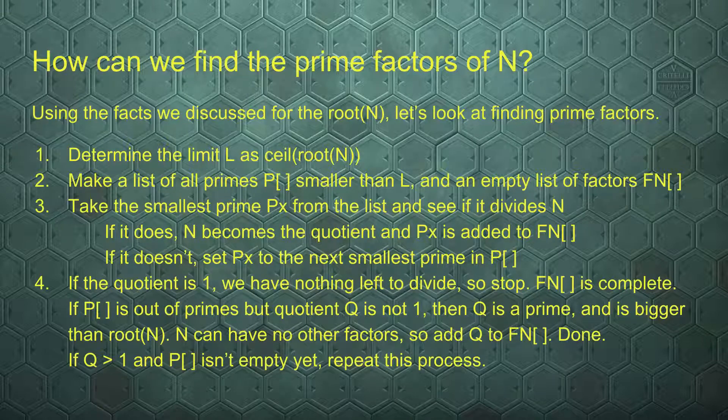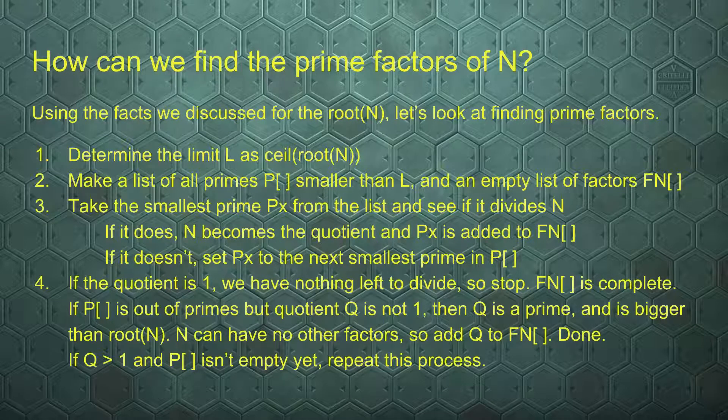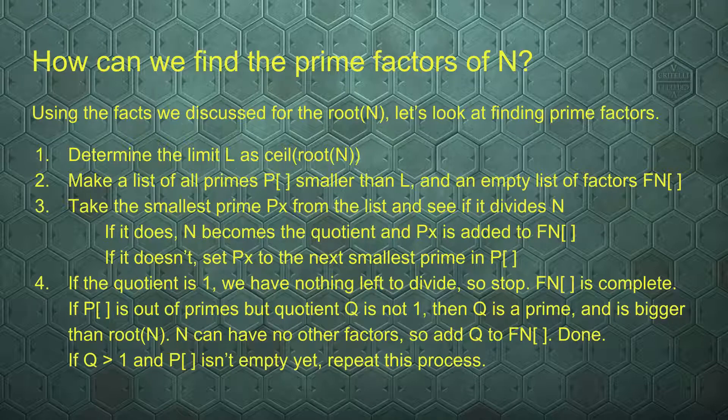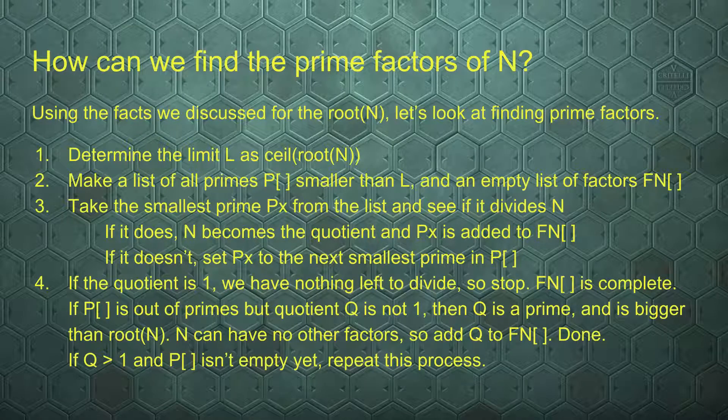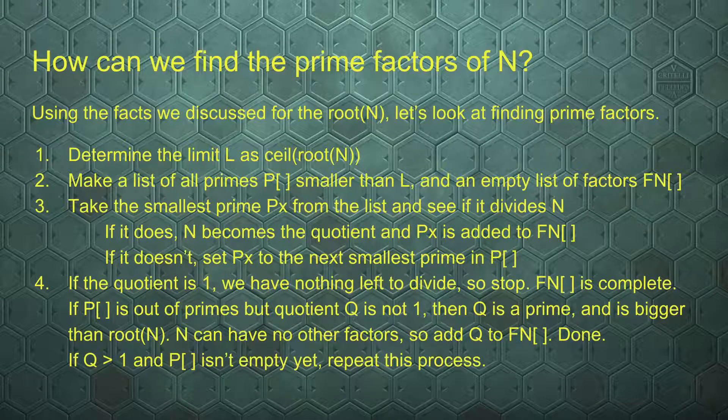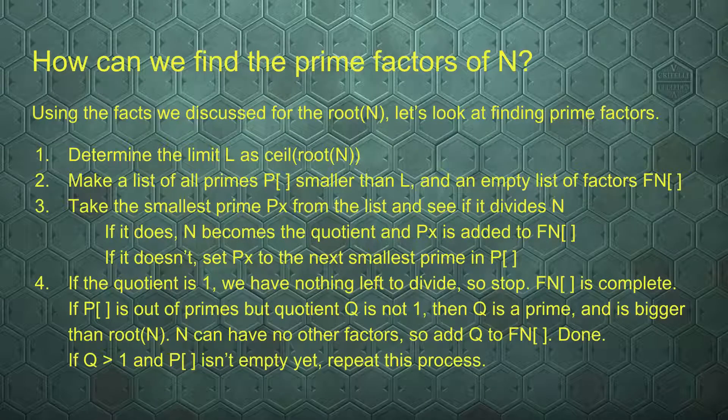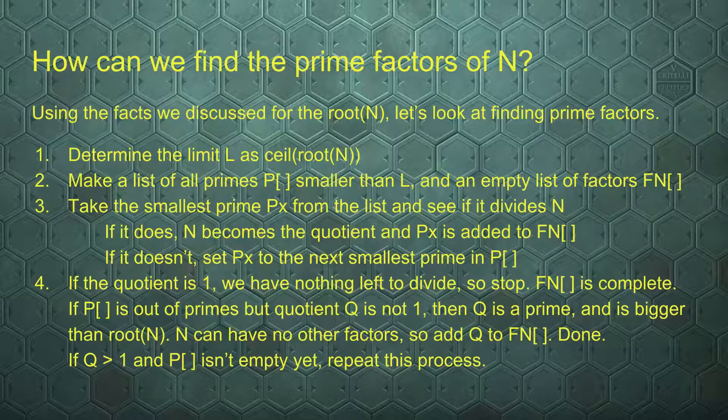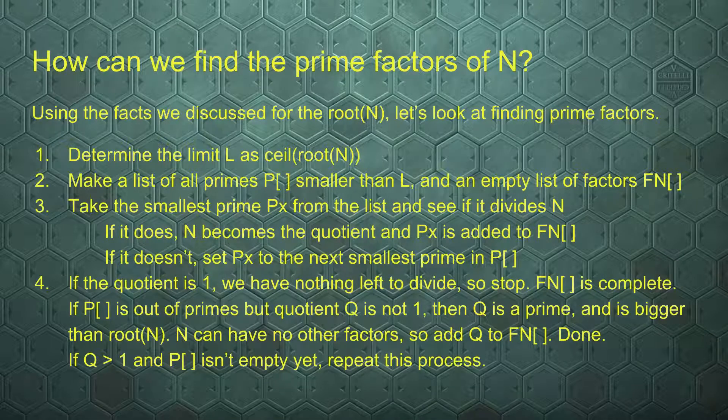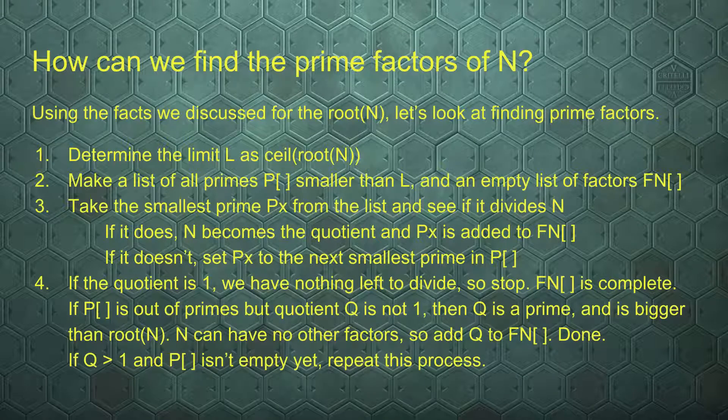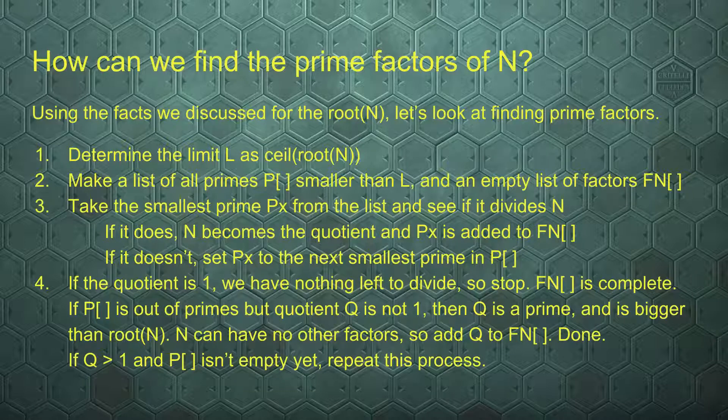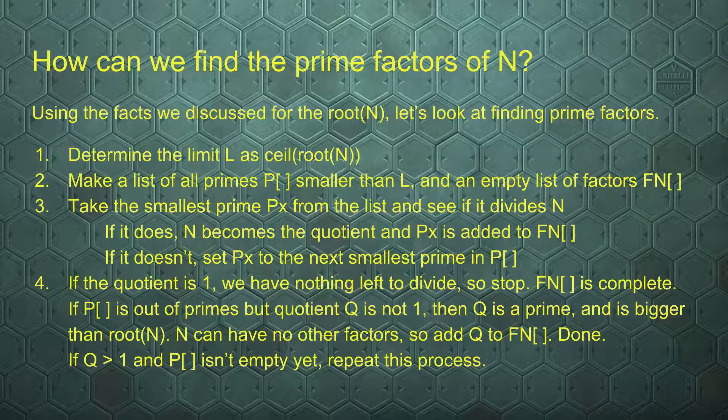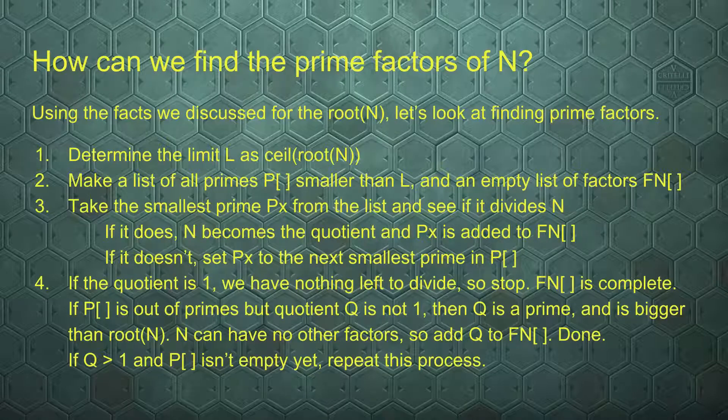If whatever we have left is 1, then we're done dividing. So all the prime factors were smaller than its root, and FN, the list of prime factors, is now complete. If we do not have any primes left to test but we still have a quotient bigger than 1, then that quotient itself is a prime. It's the only prime factor bigger than root of n. The quotient is prime because if it were not prime, it would have been divided by any primes we tested before. So add our remainder to the list of factors and we're done. If we still have a remainder and primes left to test, then go to the next prime and repeat this test.